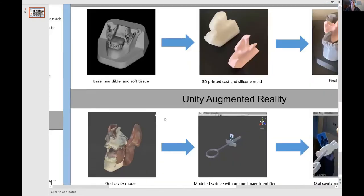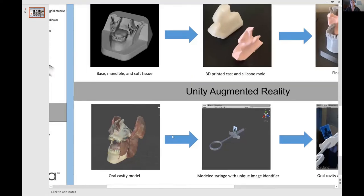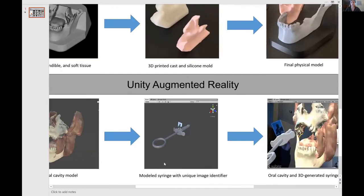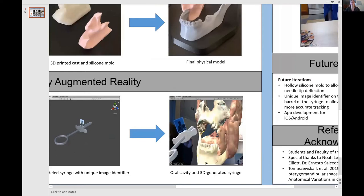The last component was developing the augmented reality component, which was done in Unity using the Vuforia augmented reality plugin. Seen here is a screen capture of the final oral cavity models in Unity. We loaded in a 3D modeled syringe, also modeled in Maya, and gave it a unique image identifier. This allows the camera to recognize the image and populate the screen with the 3D modeled syringe. The oral cavity model is fixed and stationary, allowing the dental syringe to interact with it. The inferior alveolar nerve has been artificially colored yellow for better visualization, and the medial pterygoid, lateral pterygoid, and buccinator were removed for better visibility of the nerve.